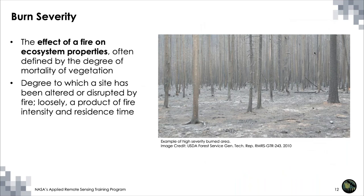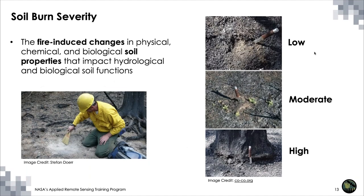Burn severity is the most mappable metric for post-fire assessment. It is the effect of a fire on ecosystem properties and is often defined by the degree of vegetation mortality. We think of burn severity as the degree to which a site has been altered by a fire, with severity determined by fire intensity and residence time. Soil burn severity is also important — fire-induced changes in physical, chemical, and biological soil properties impact hydrological and biological functions. Severely burned soil contains less organic matter but more available nutrients, and makes the landscape more vulnerable to erosion and runoff.